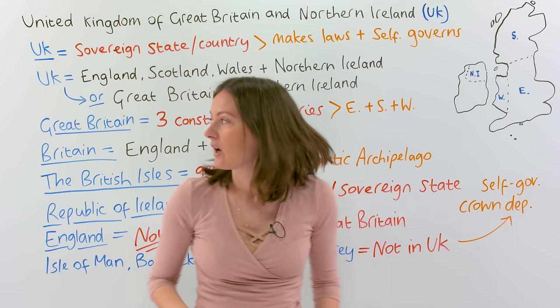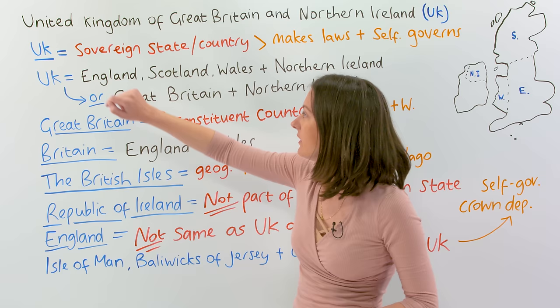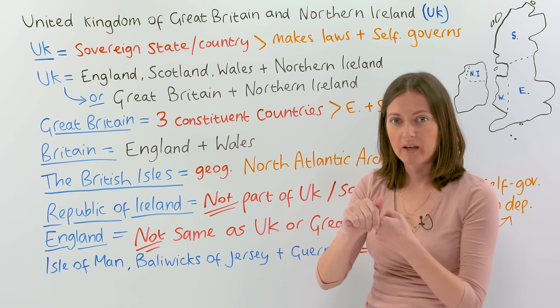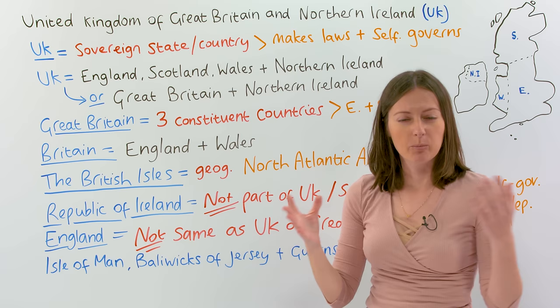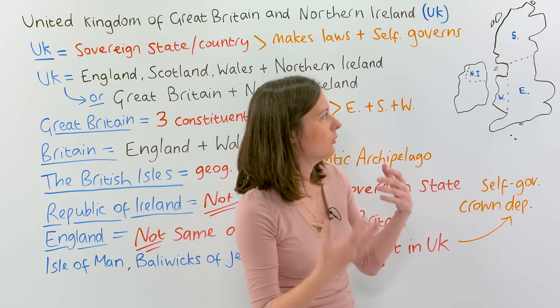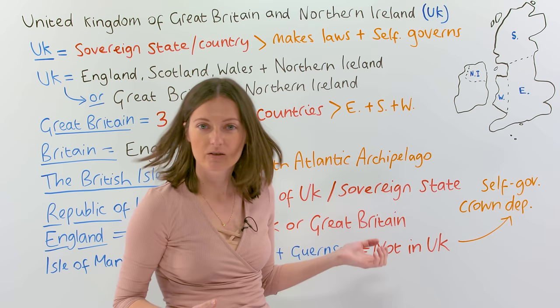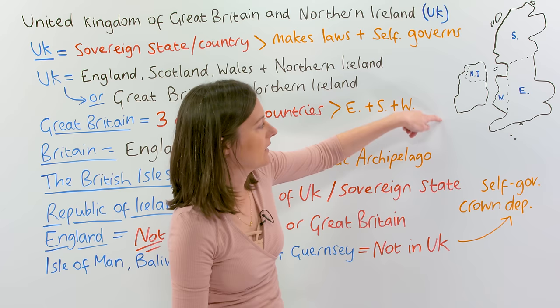So the UK is a sovereign state, or we could say a sovereign country. This means that they make all their own laws and they govern themselves. But the reason that's confusing is that when we're talking about or describing a place in the world, we talk about Scotland, England, Wales, and Ireland as being countries.